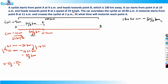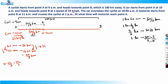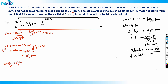One hour and 40 minutes is 5/3 hours (since 40 minutes = 2/3 hours, and 1 + 2/3 = 5/3). So in 5/3 hours the cyclist moved 50/3 km. Therefore, speed = (50/3) ÷ (5/3) = 50/3 × 3/5 = 10. Speed of cyclist is 10 kilometers per hour.